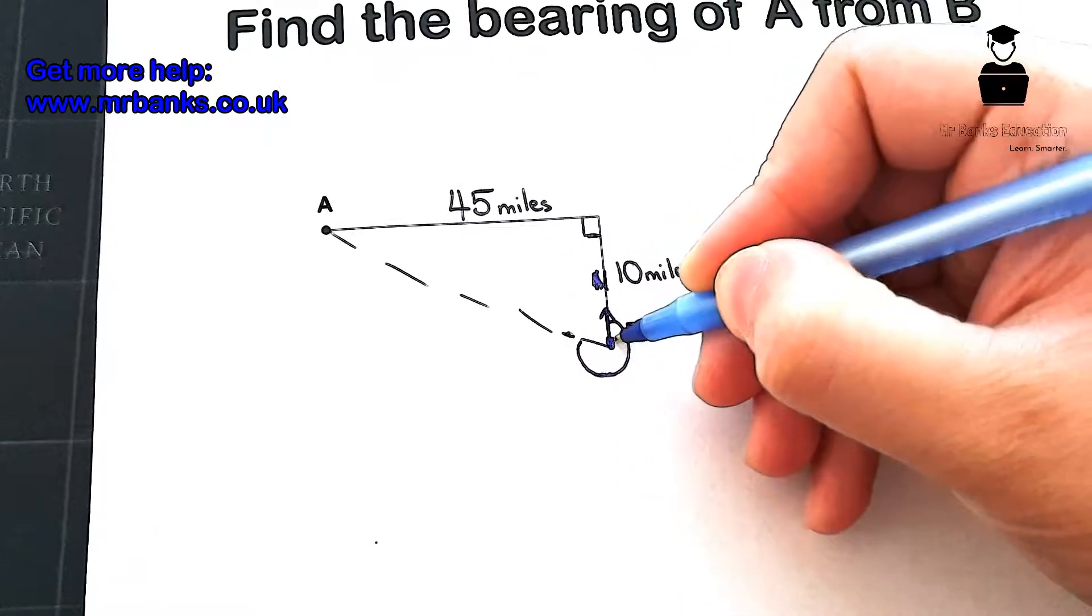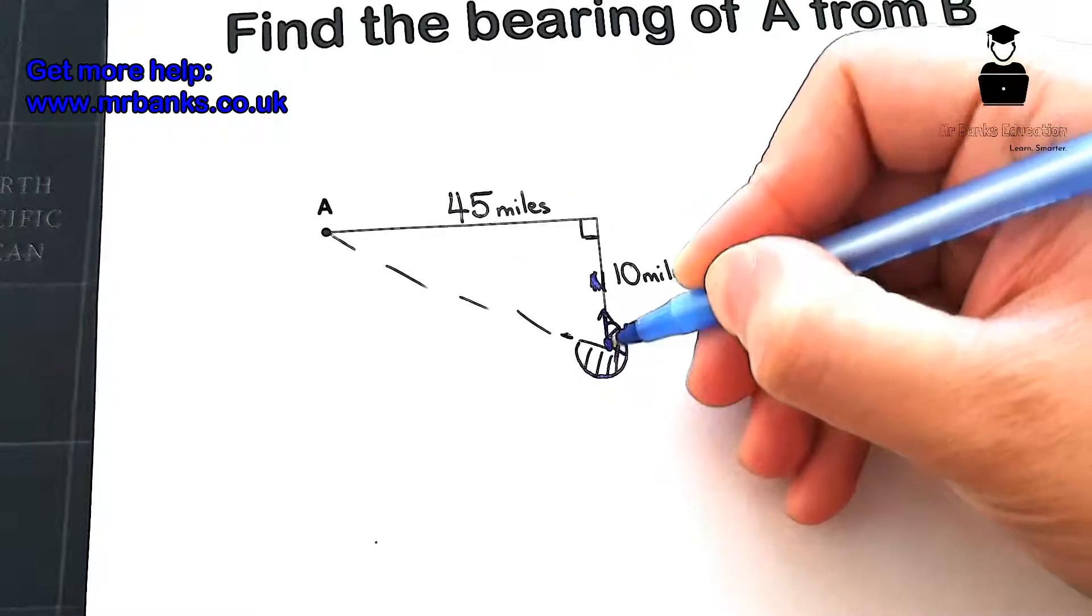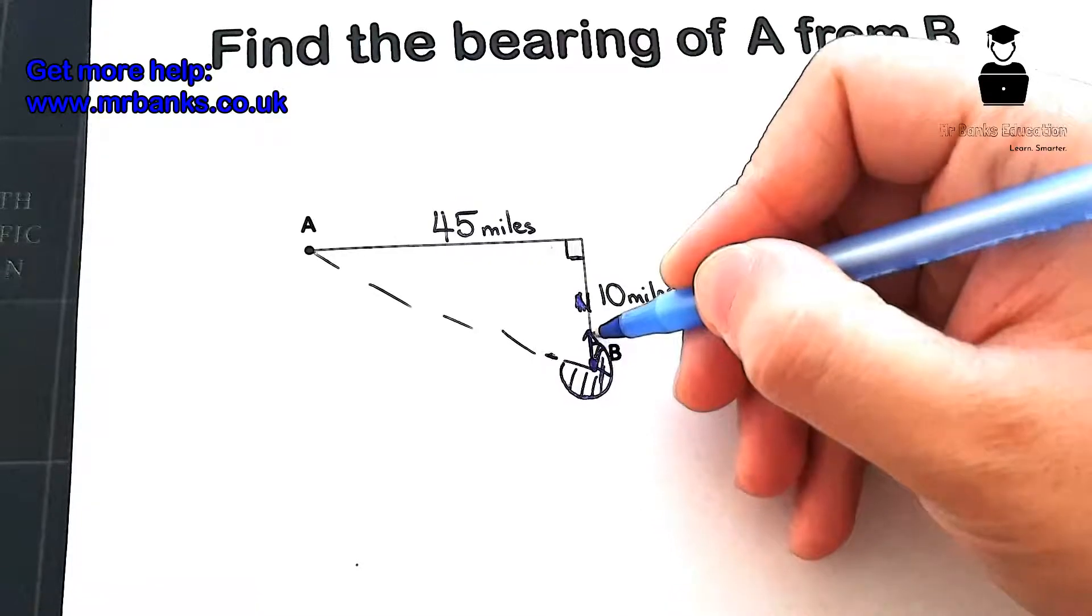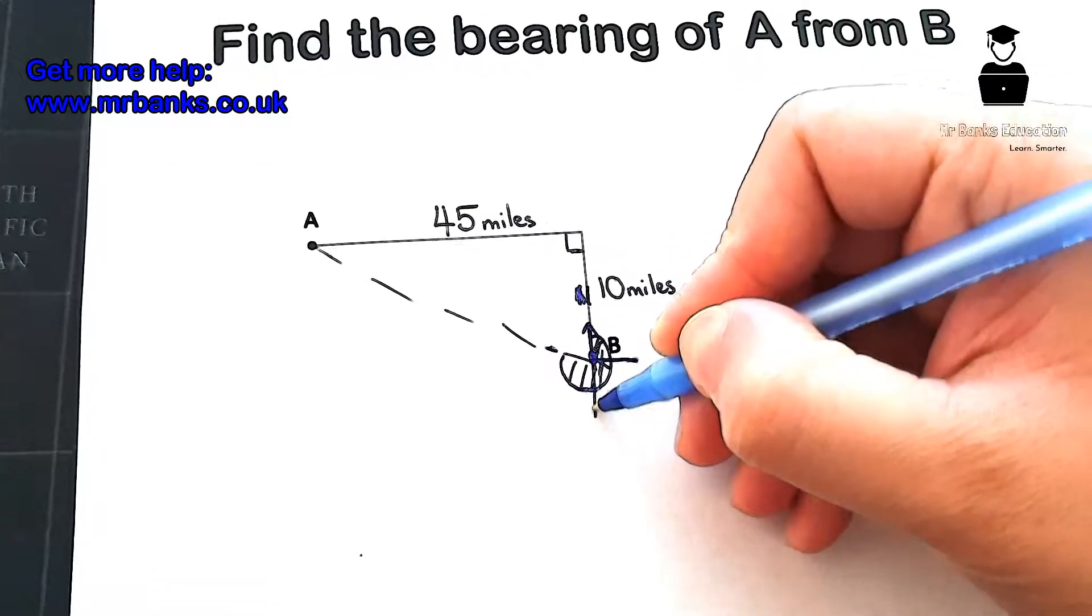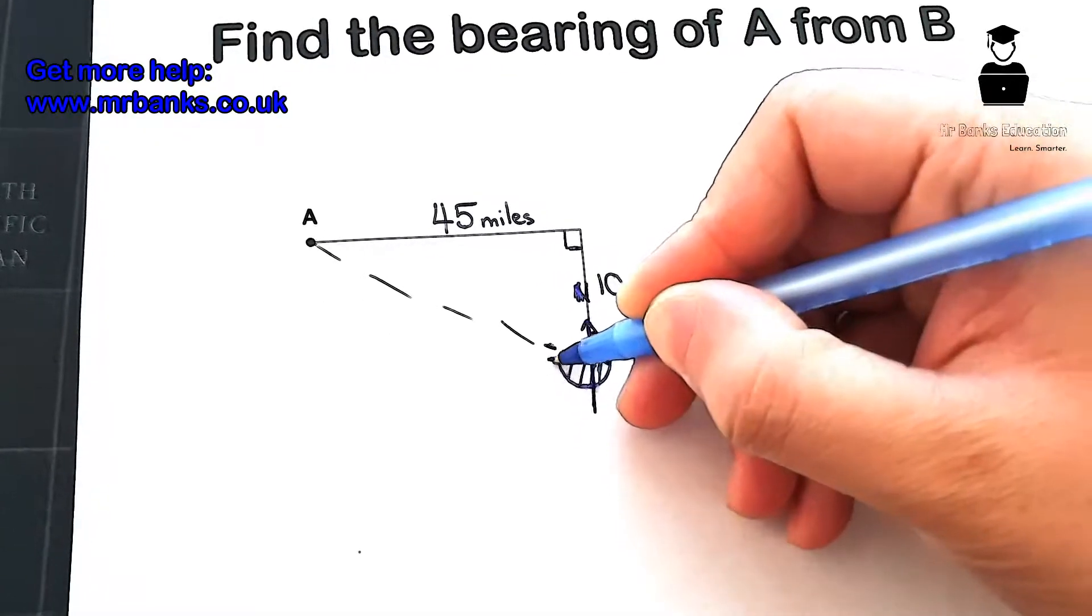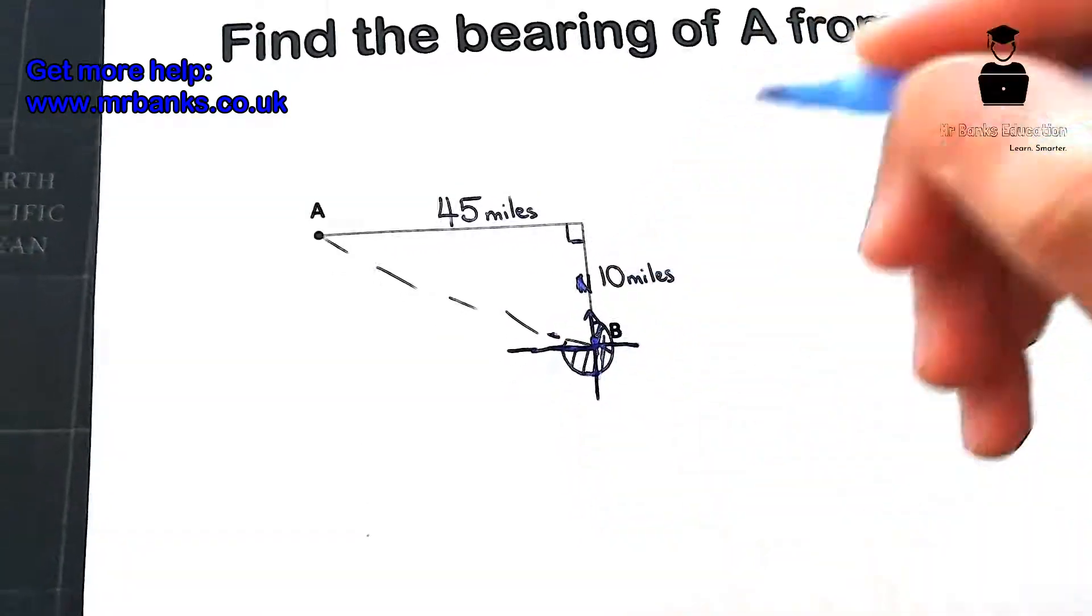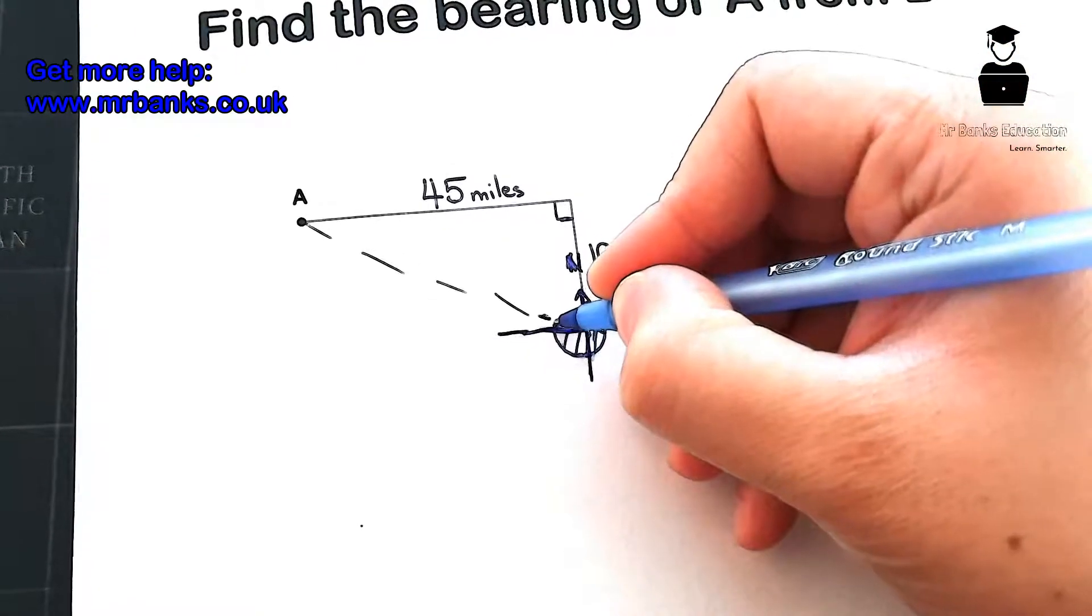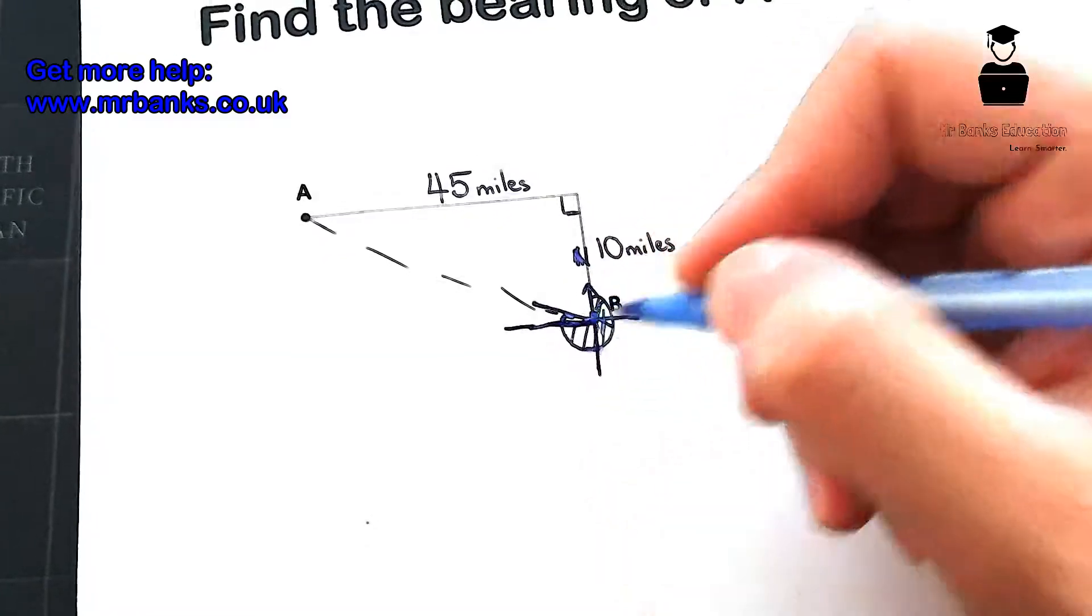Now we can see that that's 90 degrees, that is 180 degrees, and that is 270 degrees. So we know that this bearing is 270 degrees plus that tiny bit there. We need to find out what that tiny bit there is.